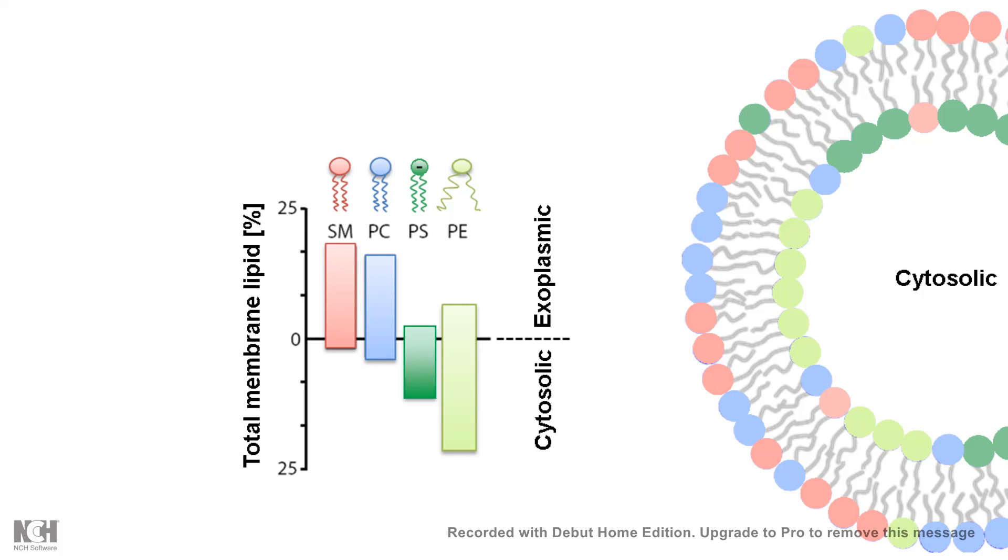For example, phosphatidylethanolamine is mostly present in the internal side or the cytosolic side, whereas phosphatidylcholine is prevalently present in the outer side, I mean the extracellular side.